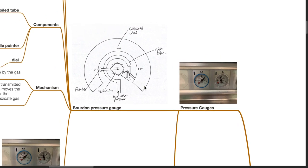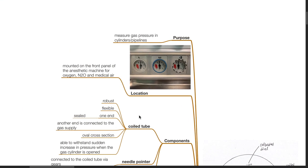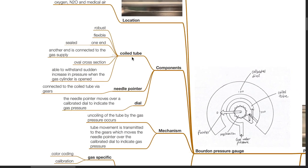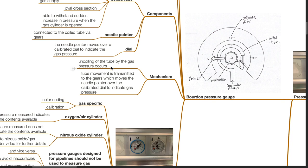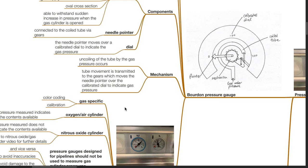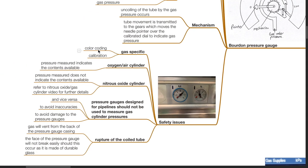Pressure gauges. Bourdon pressure gauge. Purpose: to measure gas pressure in gas cylinders or pipelines. Location: it is mounted on the front panel of the anesthetic machine for oxygen, nitrous oxide and medical air. Components: a coiled tube which is robust and flexible, with one end sealed and another end connected to the gas supply. It has an oval cross section and is able to withstand sudden increases in pressure when the gas cylinder is opened. A needle pointer is connected to the coiled tube via gears. The needle pointer moves over a calibrated dial to indicate the gas pressure. Mechanism: uncoiling of the tube by the gas pressure transmits movement via gears which moves the needle pointer over the calibrated dial. It is gas specific with color coding and gas specific calibration.